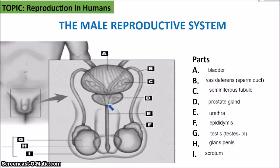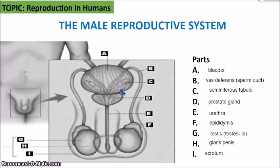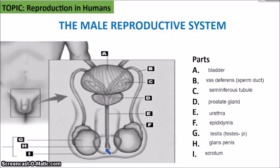When the fluids mix with sperm, that combination is called semen. The fluids come from the prostate gland, the seminiferous tubule, and another gland not shown here called the accessory gland or Cowper's gland. Those three glands produce different fluids to help with sperm motility, help sperm swim, and nourish the sperm. That semen comes out through the urethra, out of the penis. That completes the male reproductive system.